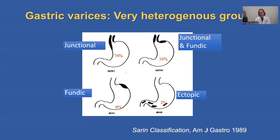Gastric varices are a very heterogeneous group. The Syringe classification, which I'm sure you're all familiar with, differentiates four types: junctional GOV-1, junctional and fundic GOV-2, fundic isolated IGV-1, and isolated gastric varices ectopic IGV-2.